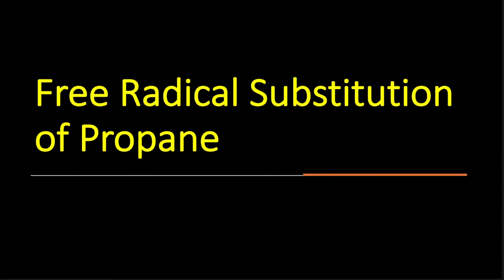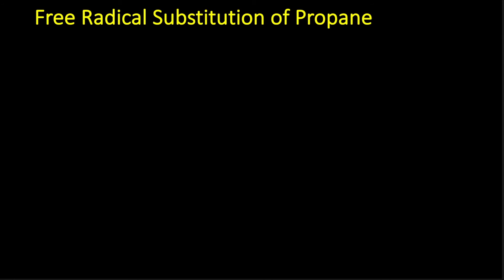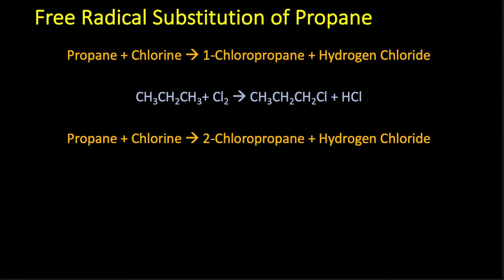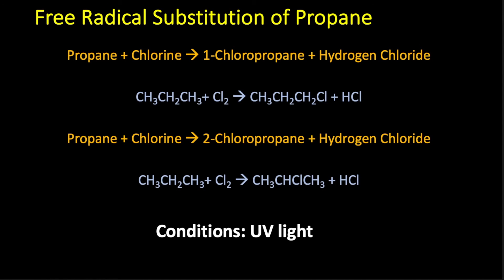Now let's look at free radical substitution of propane, which is slightly more complicated because two products are possible. The chlorine can go on carbon one to produce 1-chloropropane, or on carbon two to give 2-chloropropane, as shown by the equations. Again we need UV light to start the reaction.